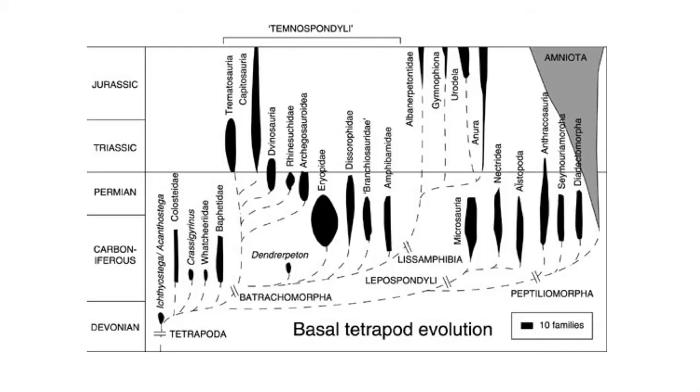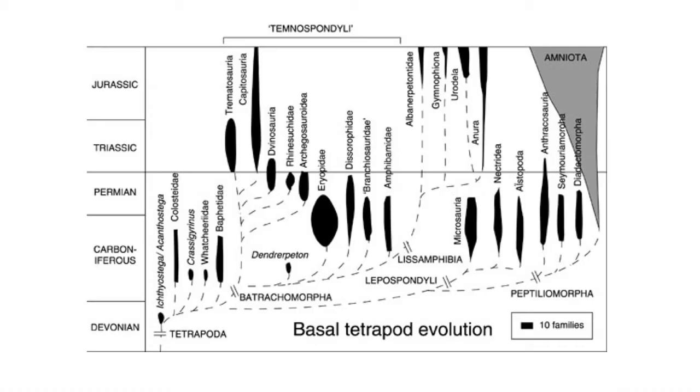Early tetrapods arose from the aquatic environment during the late Paleozoic and split into two major groups, based in part on the formation of the centrum in the vertebrae: the Temnospondylans and the Lepospondylans. Both groups were very successful during the late Paleozoic era, even into the Permian. At the Permian-Triassic boundary there was a major extinction event — one of the worst ever — and many early groups vanished. The Temnospondyls were reduced to the Trematosauria and Capitosauria, while the Lepospondylans were reduced to the Amniota, which includes reptiles, birds, and mammals.